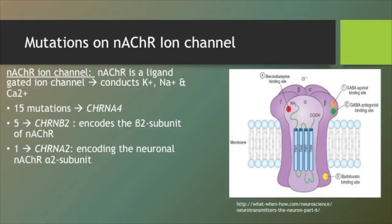There are 15 mutations identified on the CHRNA4 gene, which encodes the neuronal nAChR alpha 4 subunit. There are four transmembrane units present on the nAChR ion channel and most of the mutations are found on the second transmembrane region.